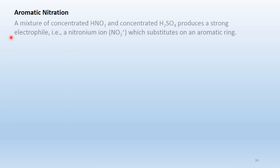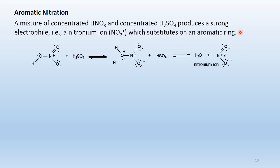Aromatic nitration uses a mixture of concentrated nitric acid and concentrated sulfuric acid — a powerful brew — to produce the nitronium ion, NO2⁺. This strong electrophile readily substitutes even on a weak nucleophile like an aromatic ring. Sulfuric acid (pKa −3) protonates nitric acid, which acts as a Brønsted base; nitric acid's pKb is likely greater than 16, so it is protonated only to a small extent.